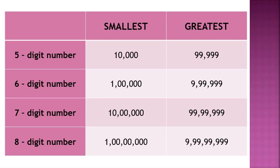Children, first let us recall what we have learned in our previous grade. In grade 4 we learned about the six-digit number, that is the lakh number. We know how to write five-digit and six-digit numbers. The smallest five-digit number is ten thousand and the greatest five-digit number is ninety-nine thousand nine hundred and ninety-nine. The smallest six-digit number is one lakh and the greatest six-digit number is nine lakh ninety-nine thousand nine hundred and ninety-nine.